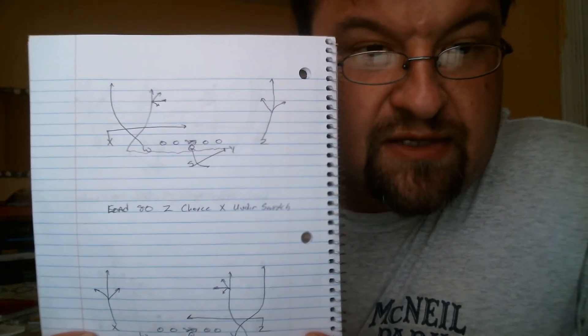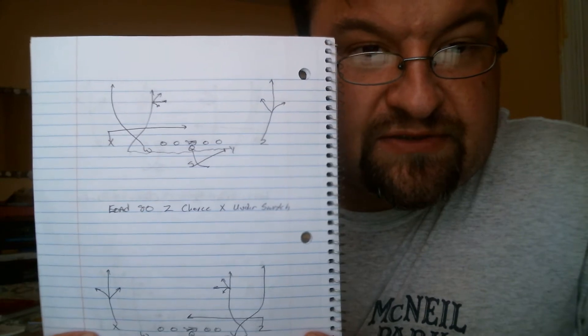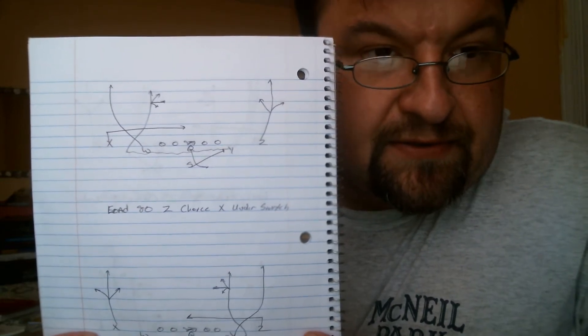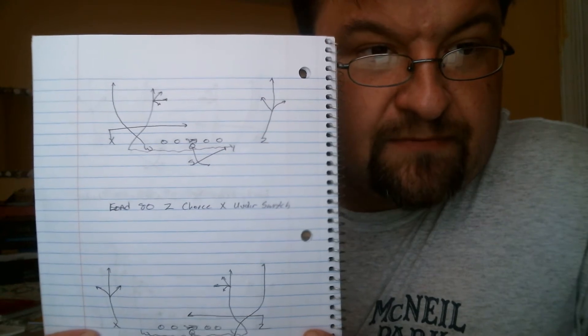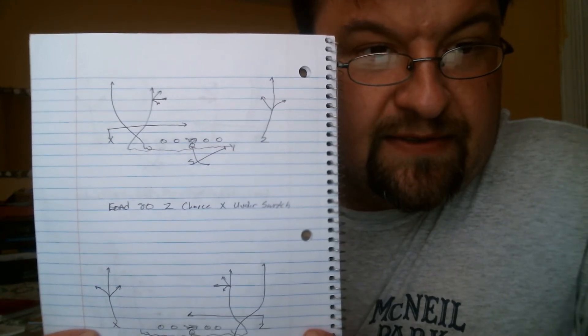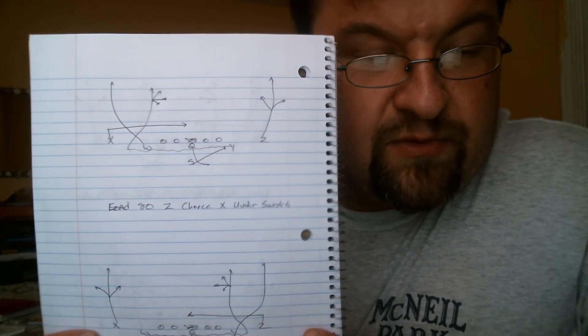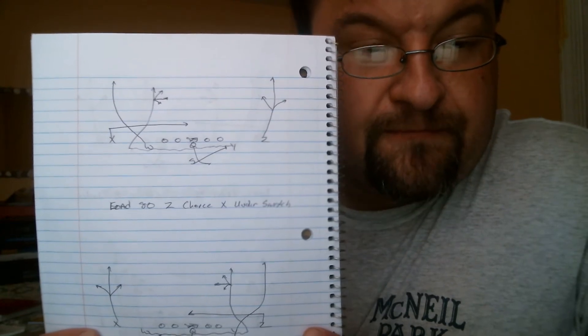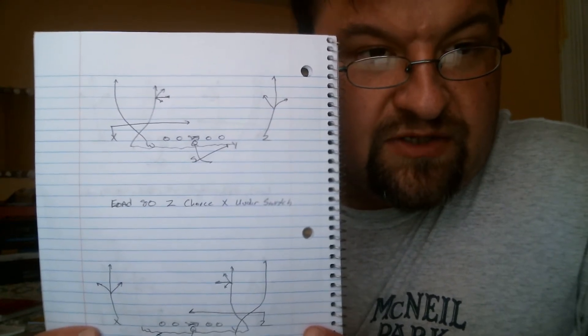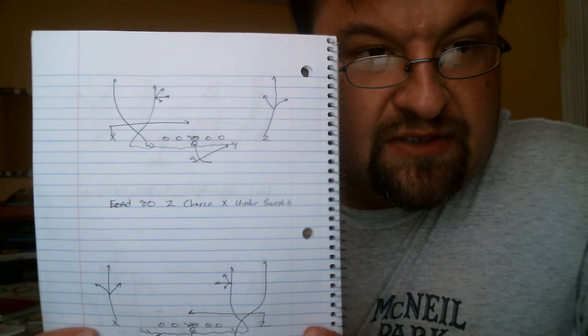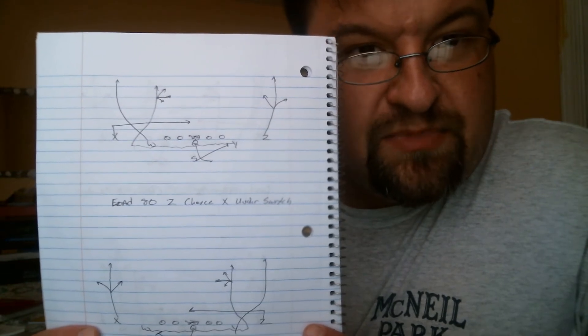If you notice, its original choice is Z choice, a drag sit by wing, seam read by Y, and X runs vertical. What we're doing here is we're switching off these concepts together and making it look just a tad bit different.